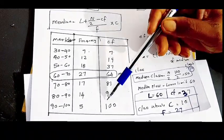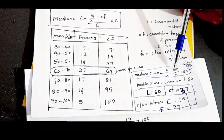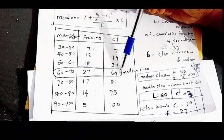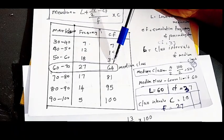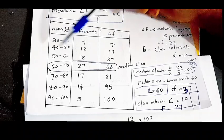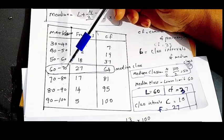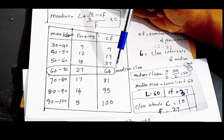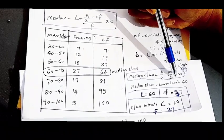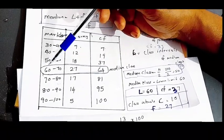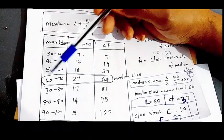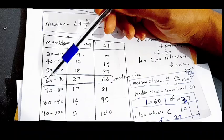If n by 2 is 80, it is 80. The median class is 80. Then 60 to 70 is this class — this is the median class. There is a lower limit in the middle class, and the lower limit L is 60.